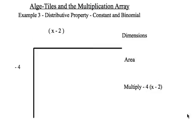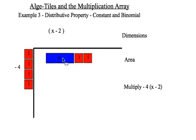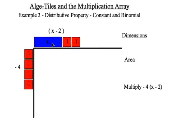Third example. I wish to multiply negative 4 times x minus 2. Now, because this is a negative on the left-hand side, I need to switch to red tiles. x minus 2 on the top. There we go.